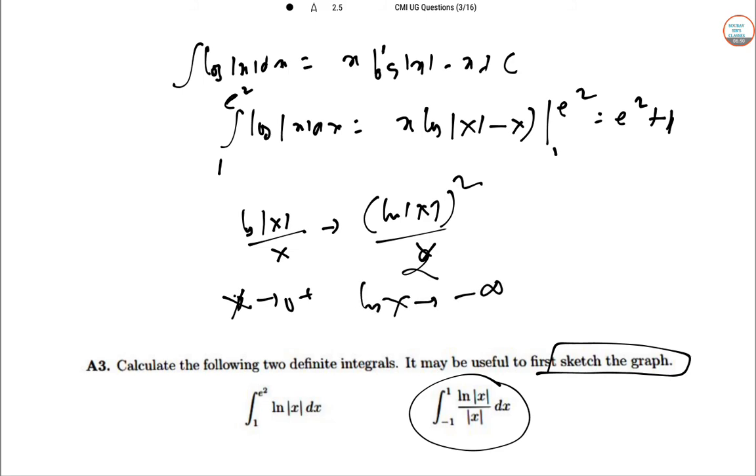So the integral from 0 to 1 is minus infinity and it is the same for the negative side because the integrand is even. So the final answer is minus infinity. It is undefined or does not exist.